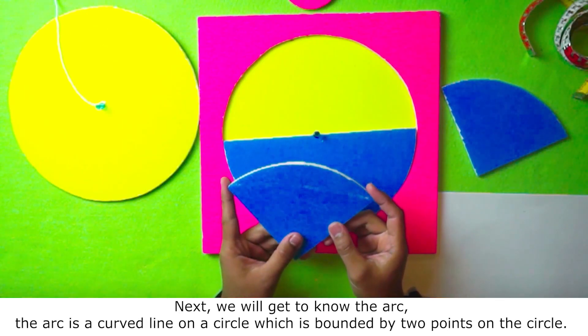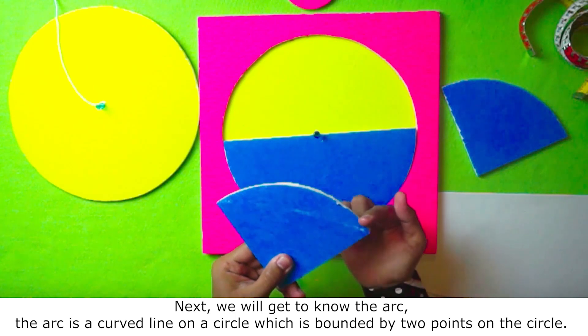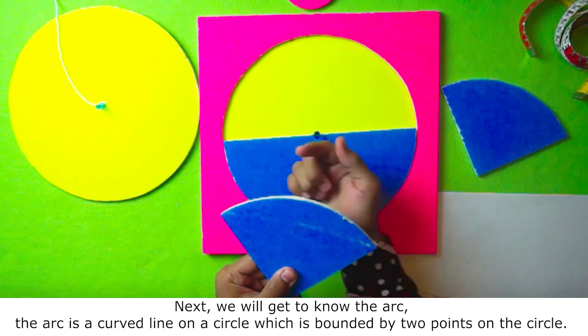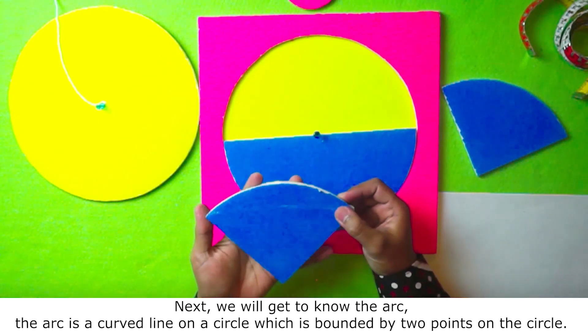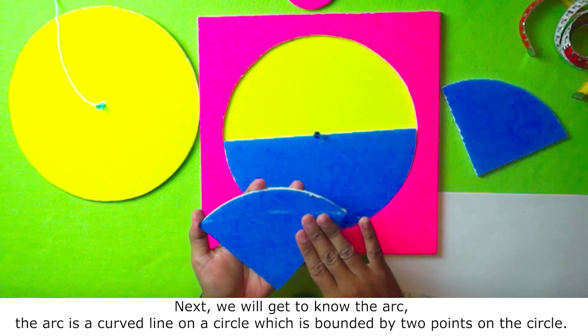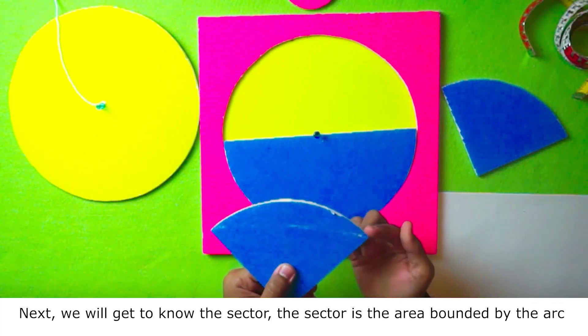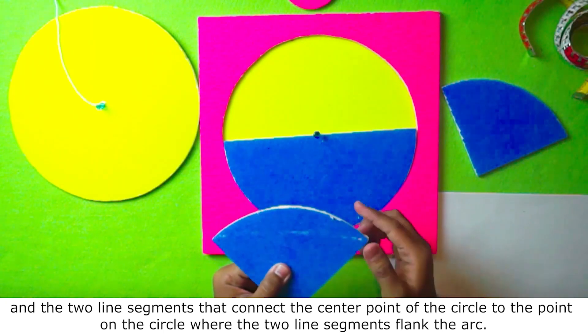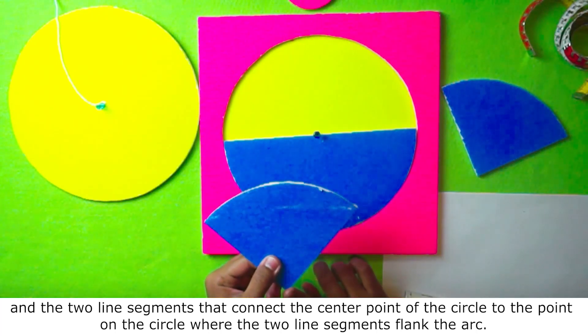Next, we will get to know the arc. The arc is a curved line on the circle which is bounded by two points on the circle. Then we will get to know the sector. The sector is the area bounded by the arc and two line segments that connect the center point of the circle to the point on the circle where the two line segments flank the arc.